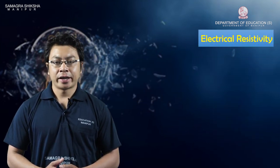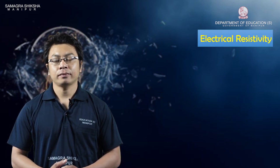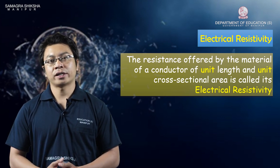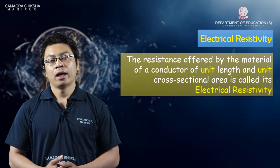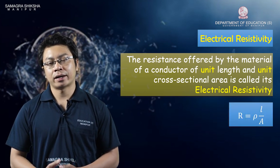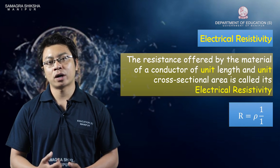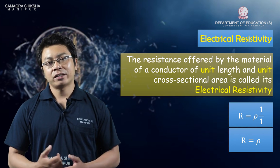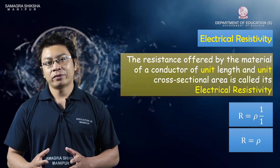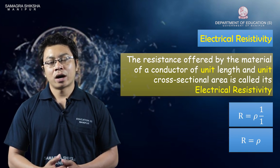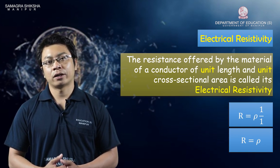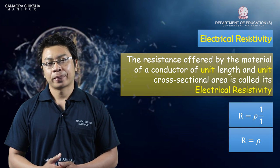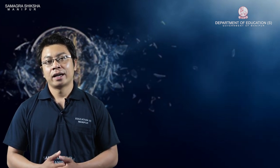Electrical resistivity is defined. If you want to connect the conductor's length L to 1 and the cross-sectional area to 1, then the resistivity is R times the area divided by length. Electrical resistivity depends on the material of the conductor.